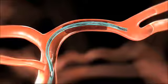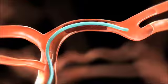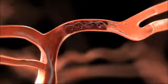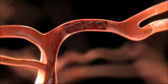To deploy the Solitaire FR, loosen the RHV. Then carefully withdraw the microcatheter while holding the Solitaire FR in place until the microcatheter tip covers only the proximal marker of the device.